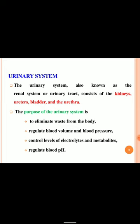The urinary system is one of the major important systems of our body because major excretion processes occur in this system. The urinary system is also known as the renal system or urinary tract. It consists of kidneys, ureters, bladder and urethra. The major purposes of the urinary system are to eliminate waste products from the body, regulate blood volume and blood pressure, control levels of electrolytes and metabolites, and regulate the pH of blood.